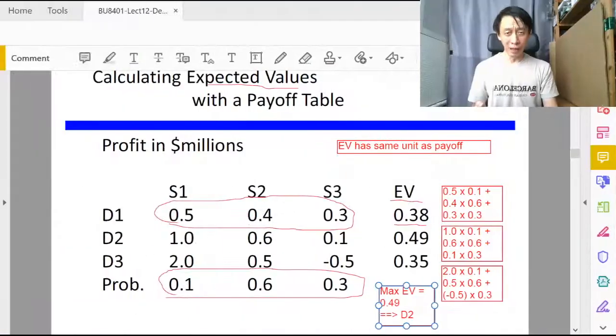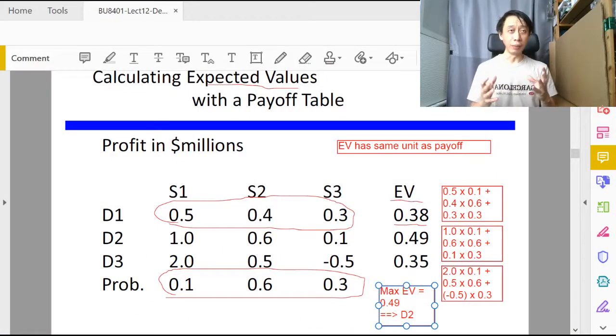We have discussed the method of making decisions with probabilities by knowing the probabilities of the state of nature occurring. We are able to combine the payoff and the probability information into a value called expected value of the decision alternative, and then we maximize our expected value by choosing the decision alternative that gives us the highest expected value.